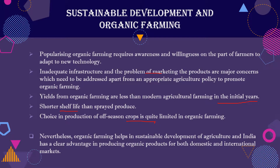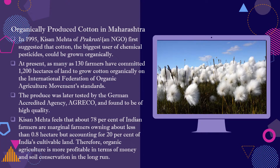So this is why organic farming is very important. It has a little lower yield, a shorter shelf life, and off-season crop options are very limited. But because it promotes sustainable development, it is very important for the future. Worldwide demand is growing steadily, so we need to focus more on organic farming.